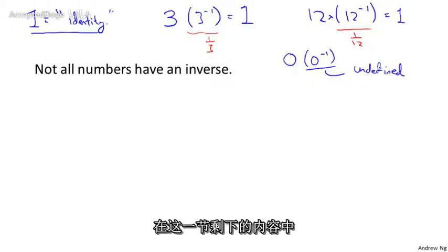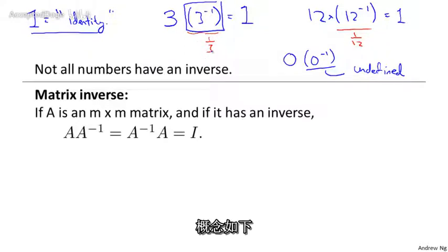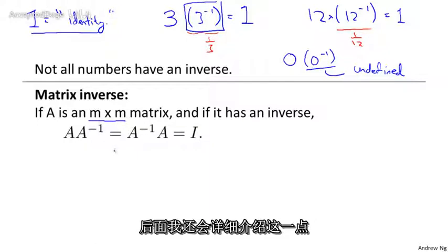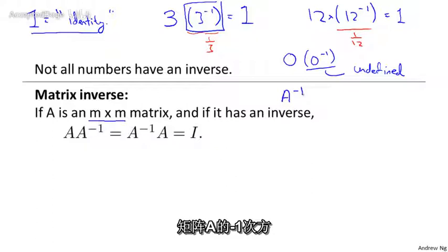And what we want to do in the rest of the slide is figure out what does it mean to compute the inverse of a matrix. Here's the idea. If A is an M by M matrix, and if it has an inverse, then the inverse is going to be written A to the minus 1, and A times this inverse, A to the minus 1, is going to equal A inverse times A, which gives us back the identity matrix.